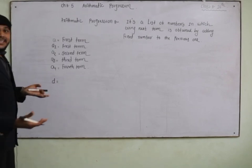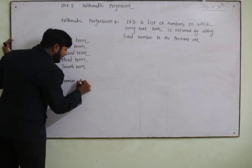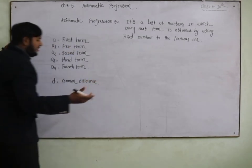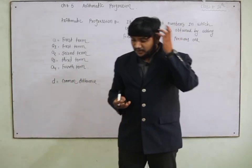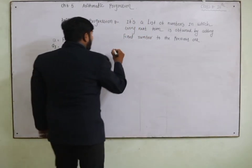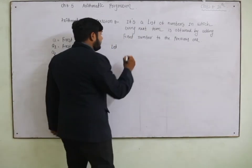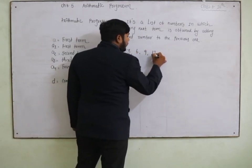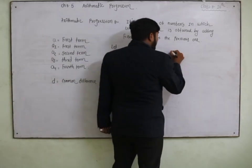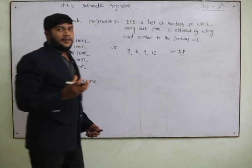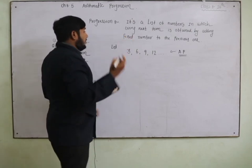'd' means common difference. To understand where this term comes from, let us take an example AP: 3, 6, 9, 12, and so on — only three dots. This is an AP, and in an AP the gap is always the same. Let a1 = 3, a2 = 6, a3 = 9, a4 = 12.